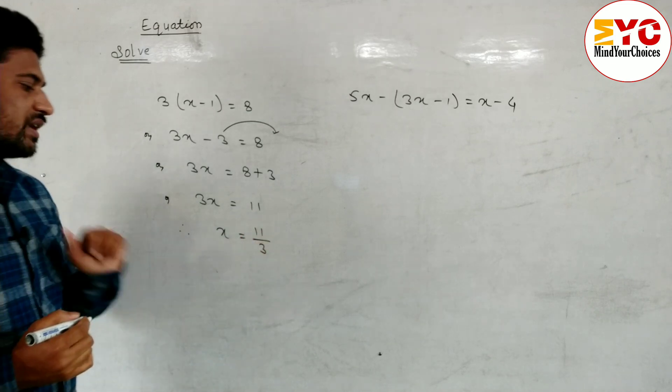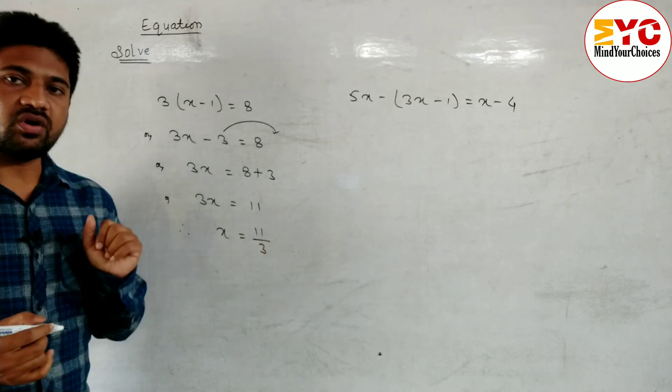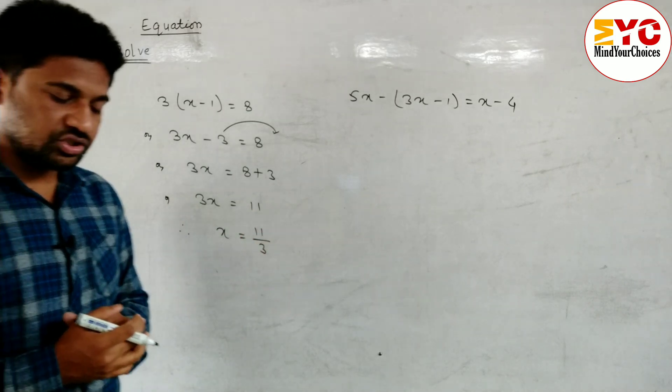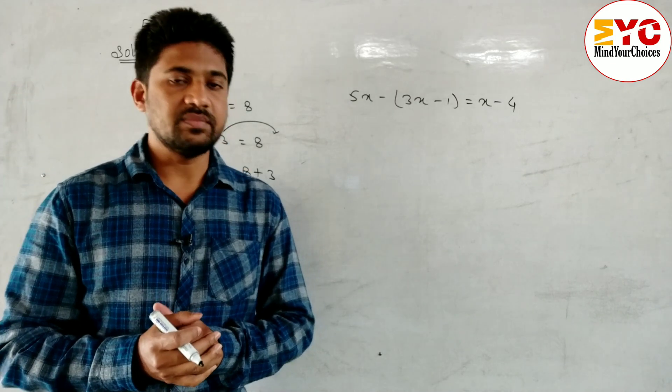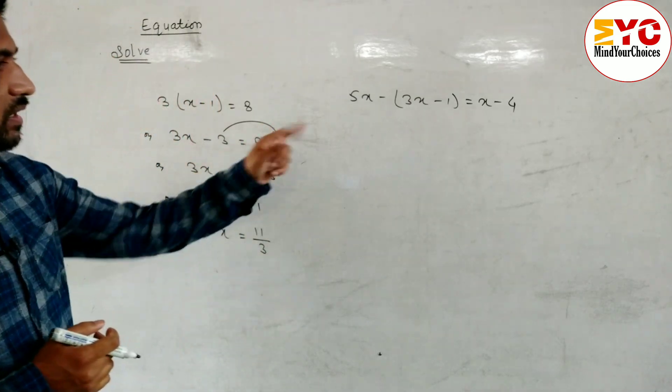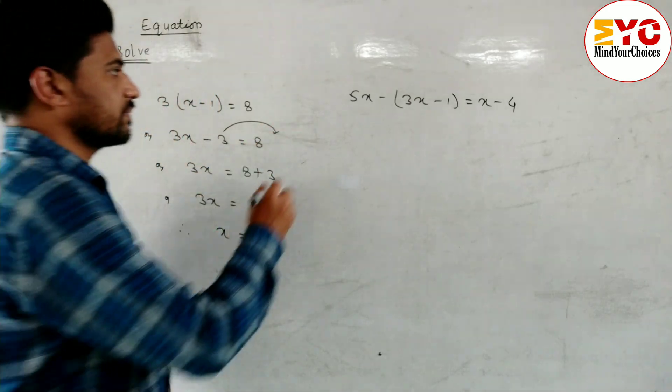Therefore the value of x is equal to — since 3 is in multiplication we have to divide: 11 by 3. After this write in fraction or in mixed fraction. Don't write in decimal. Hope you understand this one.